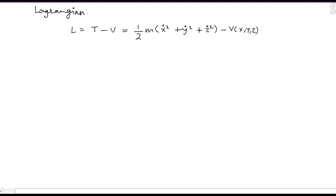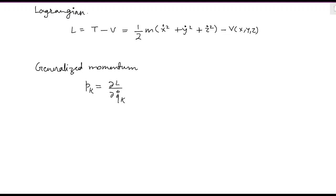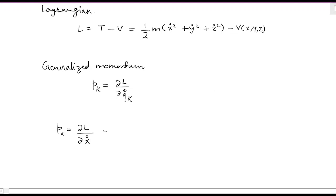The generalized momentum is given as p_k equals ∂L/∂q_k-dot. To find the generalized momentum corresponding to Cartesian coordinates, for x: p_x equals ∂L/∂x-dot. Differentiating the Lagrangian with respect to x-dot, the differentiation of x-dot squared gives 2x-dot, and the two cancels out, leaving m·x-dot. The potential V is only a function of x, y, z so it contributes nothing. Therefore p_x = m·x-dot.